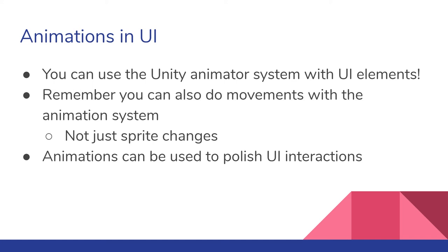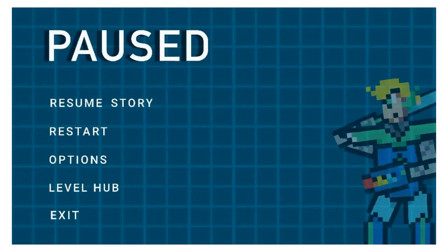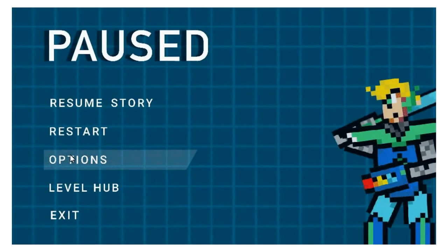You can also use the animation system for UI. Just like we used it for sprite animations, you can use it for movement too — using the record feature, you can record UI moving down, up, sliding, or fading. This is more of a polish thing to make smooth UI transitions instead of elements just appearing abruptly. Here's an example from a class project where a menu slides down and different elements fade in and out.